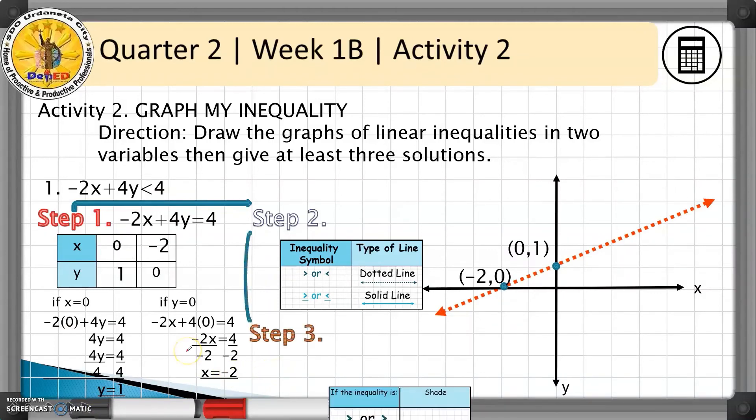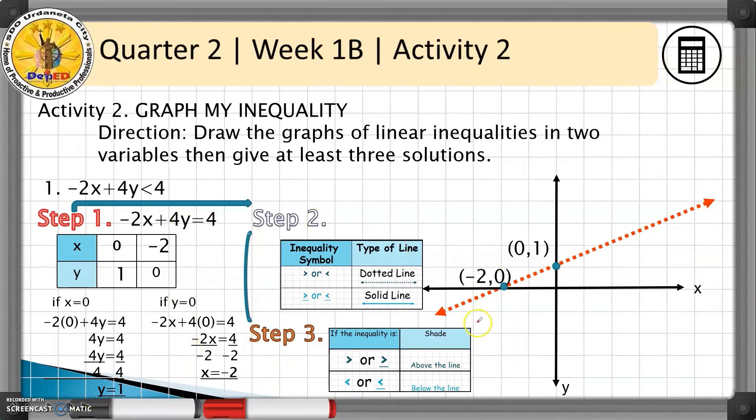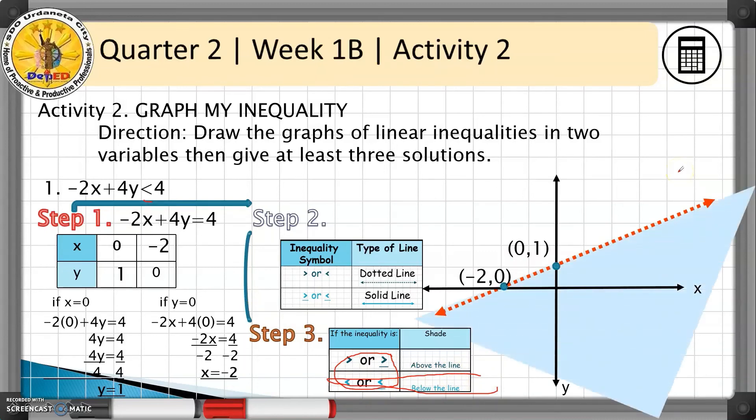Step three is to shade. Deciding where to shade depends on the inequality symbol. Since the inequality sign used here is less than, which is in the second row, we'll shade below the line.